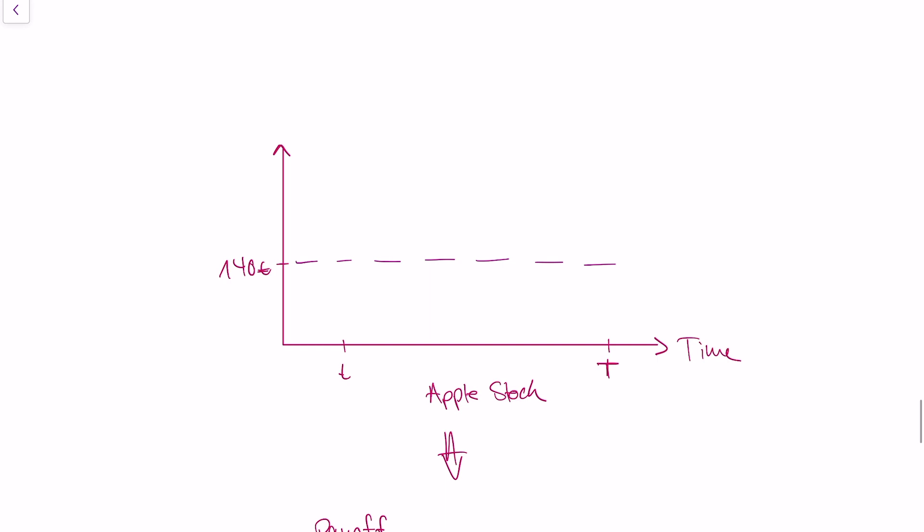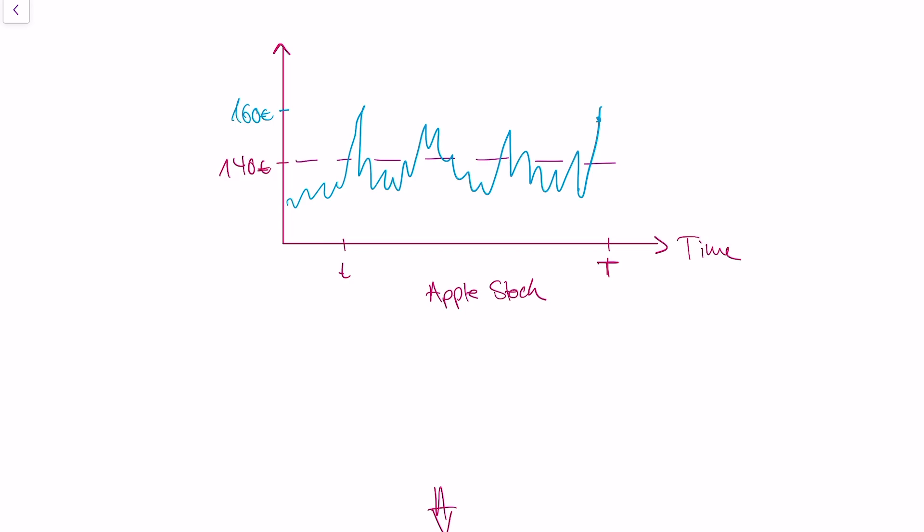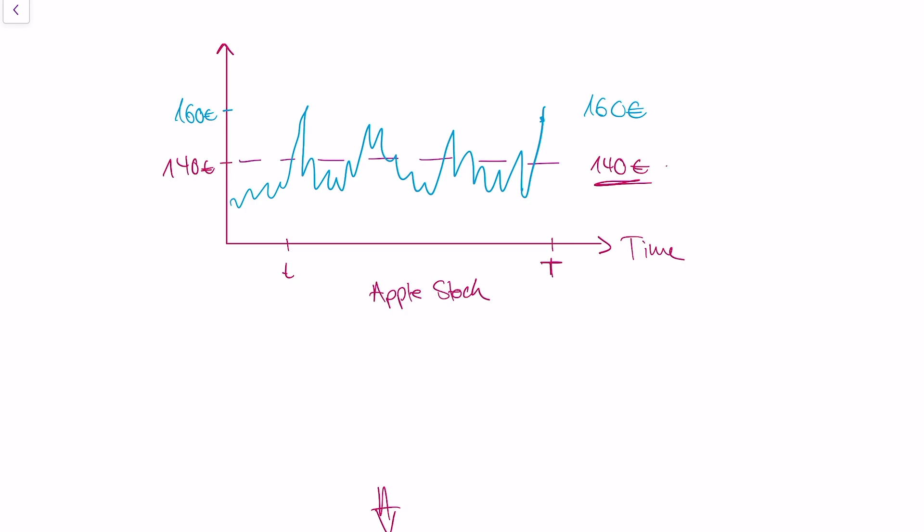So what happens? Well, you look at how the Apple stock develops from today and maybe this is the trajectory of the Apple stock. And it turns out at time T, our Apple stock is at 160 euros. What do you do? Well, you have the option to buy the Apple stock at 140 euros and the market price of the Apple stock is at 160 euros. So what you'll do is you'll use your option, you'll buy your Apple stock from the option for 140 euros and you'll sell it on the market for 160 euros. So your revenue is 20 euros.